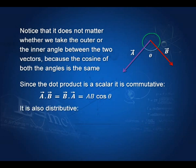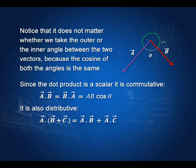The dot product is also distributive: a · (b + c) = a·b + a·c. So vector a · (vector b + vector c) equals vector a · vector b plus vector a · vector c.